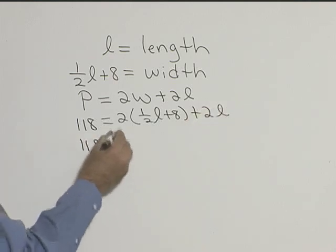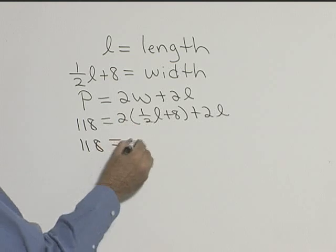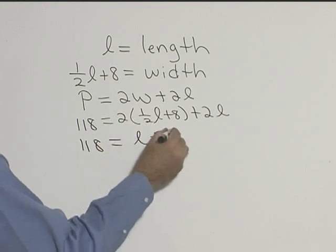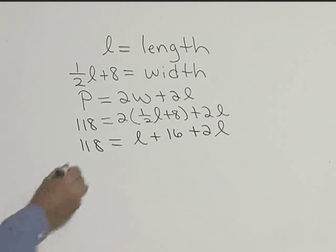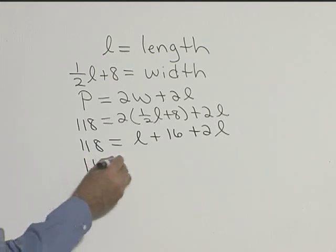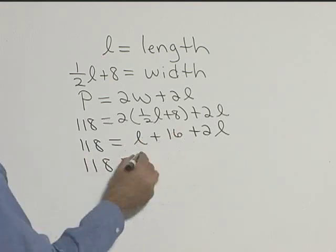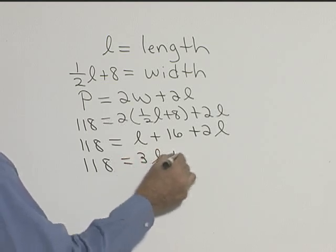Let's clear our parenthesis. We'll have 118. Two times one half will leave us L plus 16 plus 2L. Now we need to combine terms on the right side. We'll have 118 is equal to L plus 2L, which will be 3L plus 16.